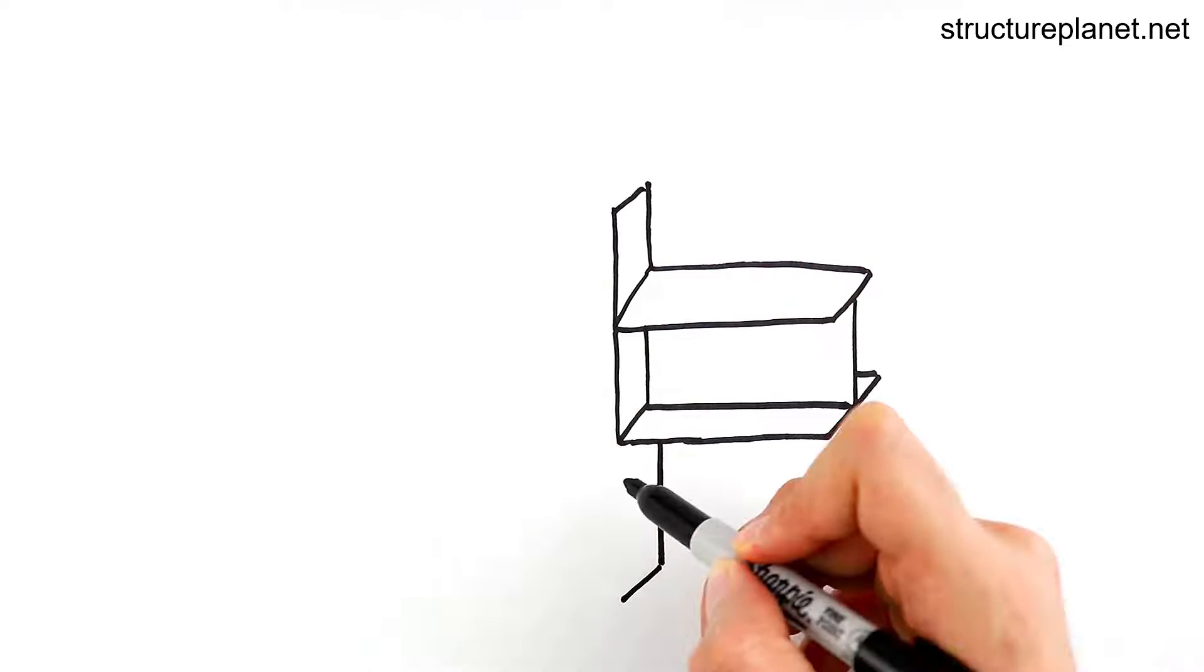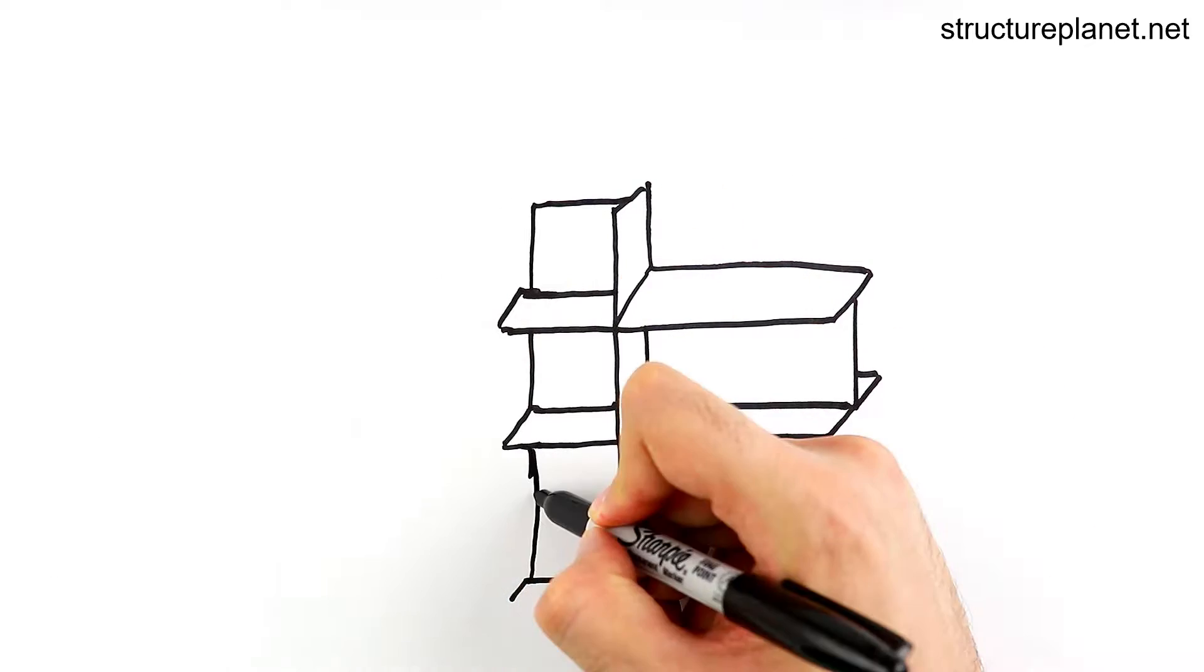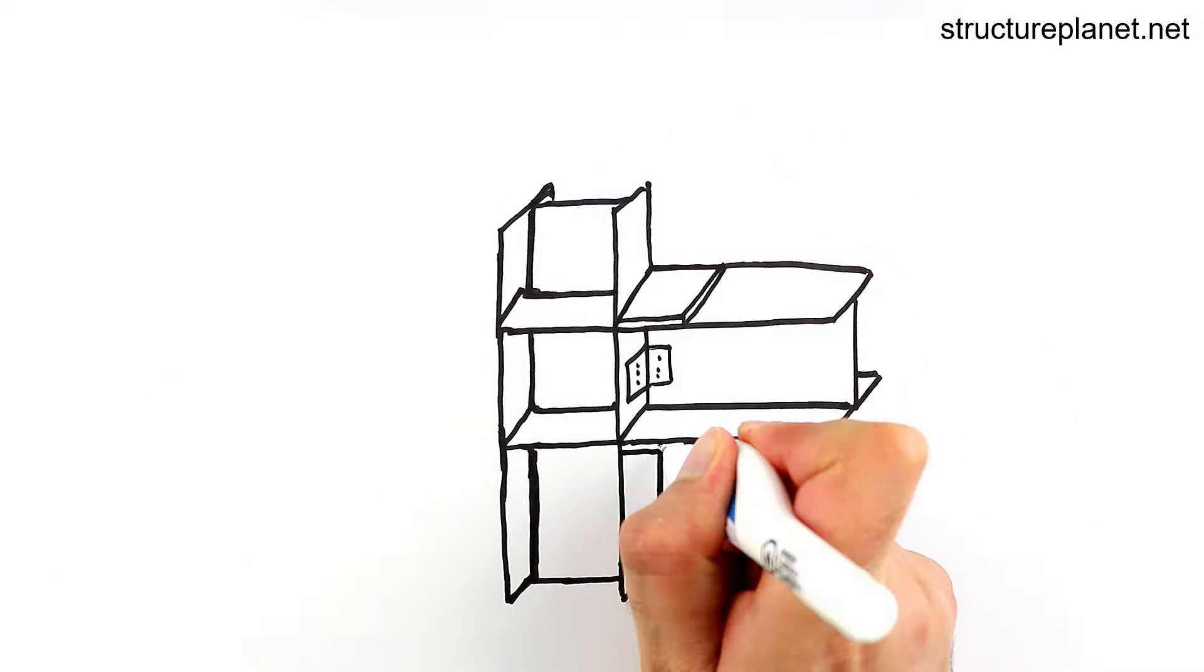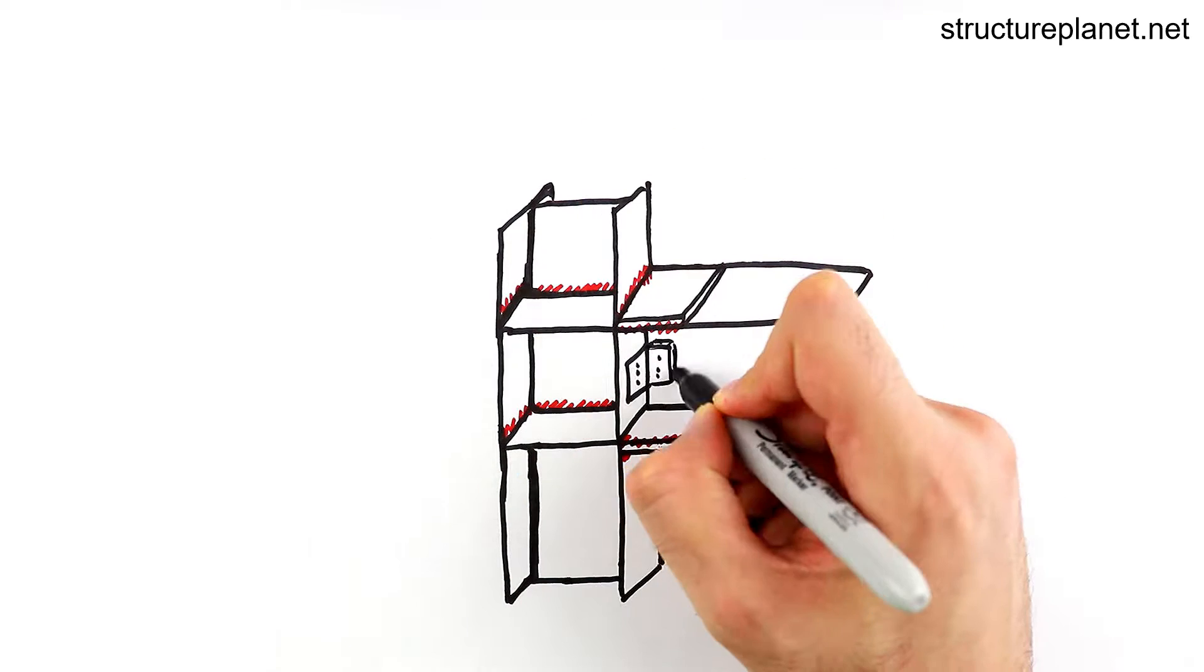Moment frames, which rely on rigid connections between beams and columns, do not block spaces, but require larger beam and column sizes, more expensive connections and provide less stiffness compared to the other two systems.